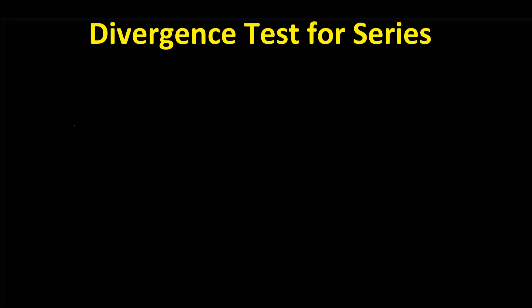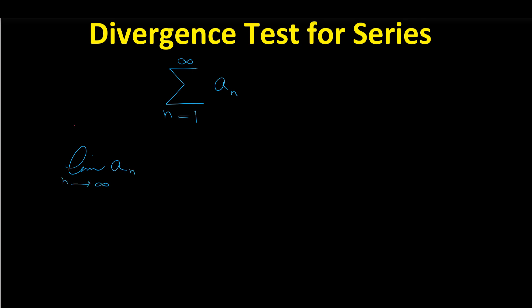In this video I'm going to show you what the divergence test for series is and how we can use this test to prove that a series is divergent. Consider a general series in the form of sigma n from 1 to infinity of a sub n. If we take the limit of a sub n as n goes to infinity and this limit does not exist, or this limit does not equal 0, then we can say that the given series diverges.